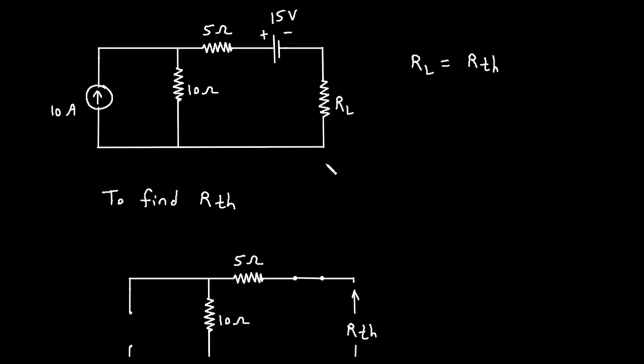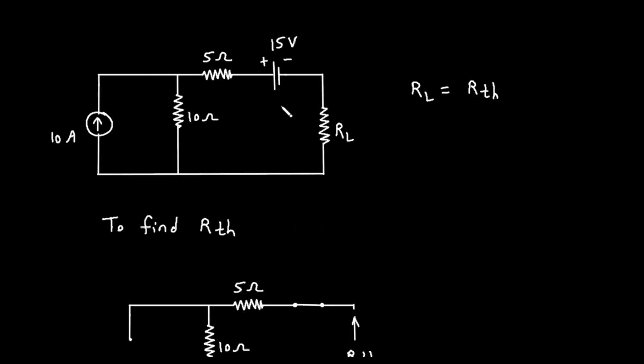The second, and very crucial, step is to deactivate all the independent sources in the circuit. We have two independent sources here: a 10A current source and a 15V voltage source. Here's how we deactivate them.